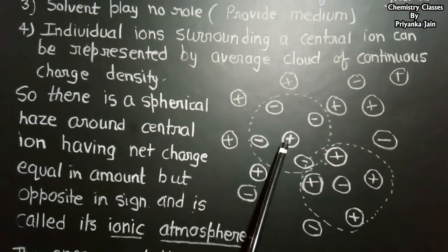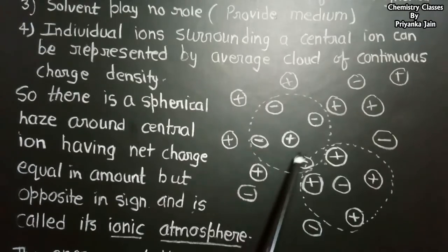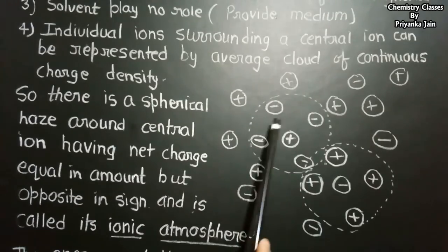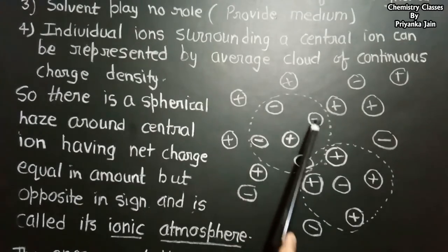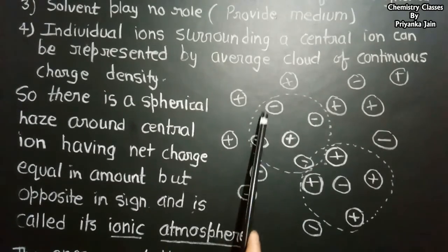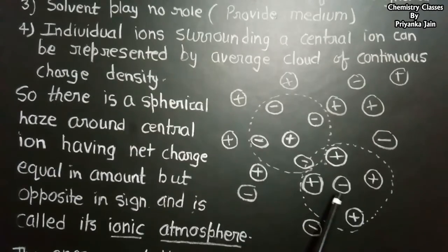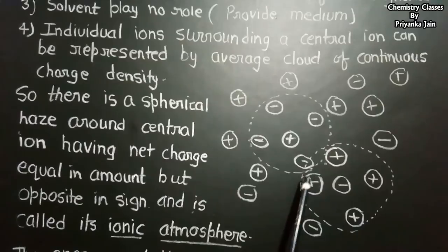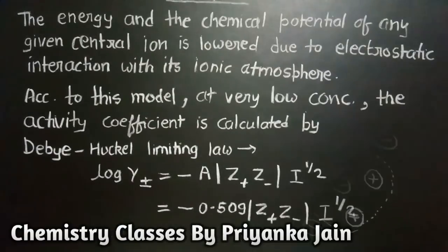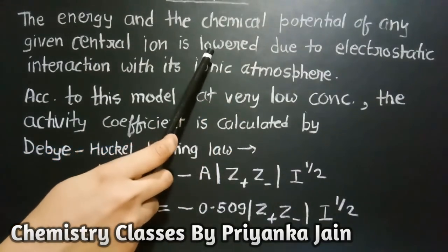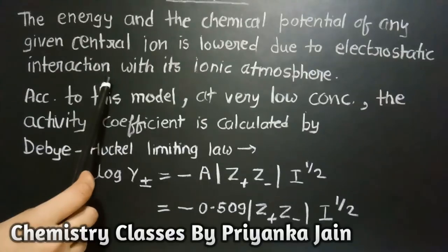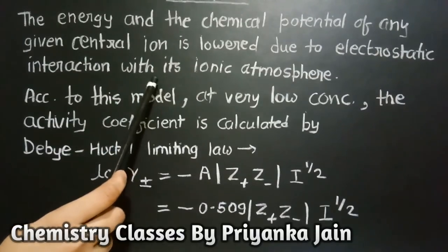This is called the ionic atmosphere. If we consider a cation, all the surrounding negative anions make up its ionic sphere — the dotted line shows its ionic atmosphere. Similarly for an anion, the dotted line shows its ionic atmosphere. The energy and chemical potential of any given central ion is lower due to the electrostatic interaction with its ionic atmosphere.